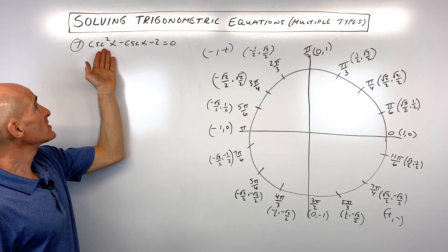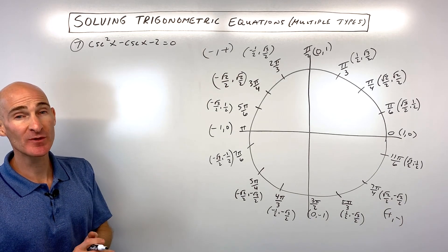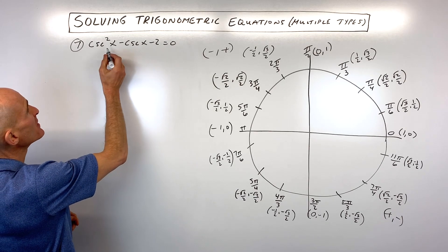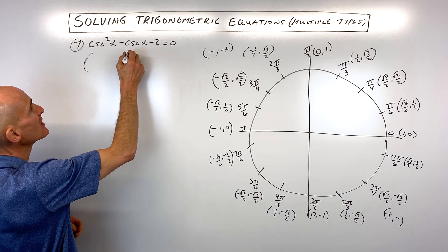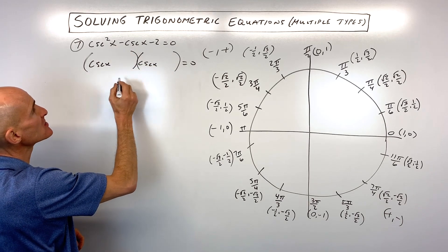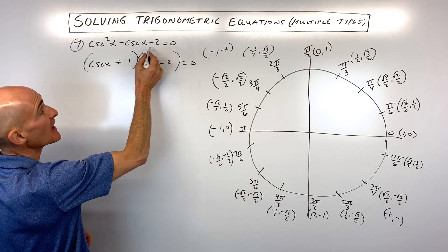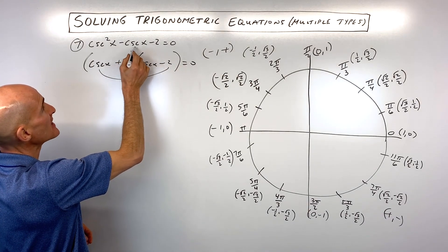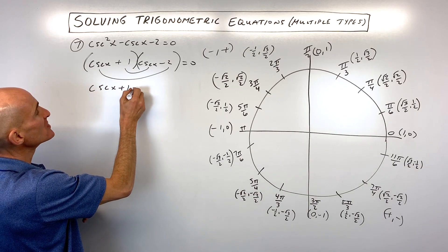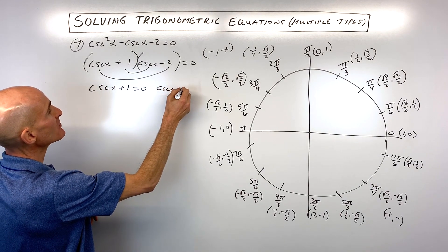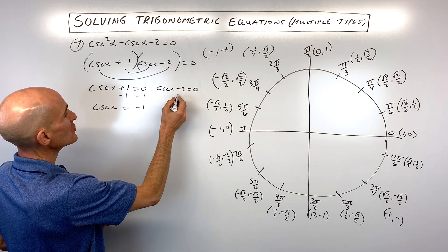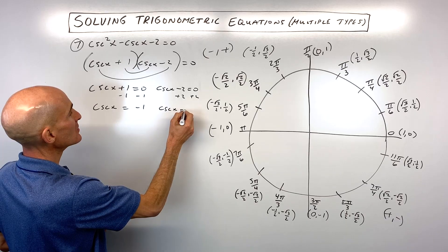Number 7: csc²(x) - csc(x) - 2 = 0. Now we're working with a reciprocal trig function. With a squared term and a first-power term, I'll factor into two binomials: (csc(x) + 1)(csc(x) - 2) = 0. Setting each factor to zero: csc(x) = -1 and csc(x) = 2. Since cosecant equals 1/sine, taking reciprocals gives sin(x) = -1 and sin(x) = 1/2.